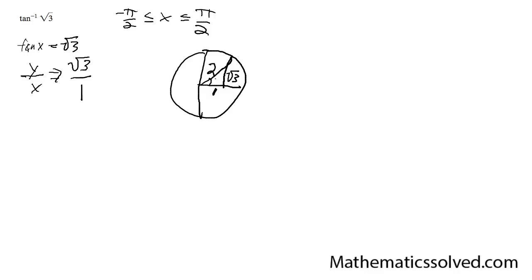As you can see, this is a 30-60-90 triangle. This is 60 degrees, which means this is pi over 3. And this is your answer. So your solution to this problem is pi over 3.